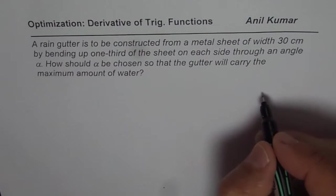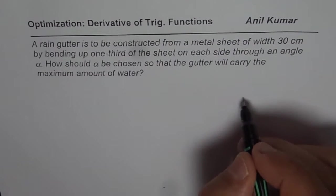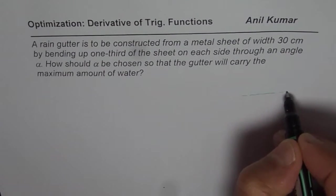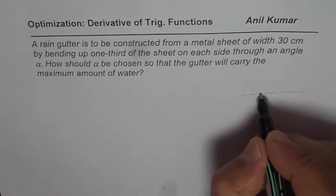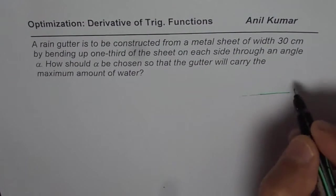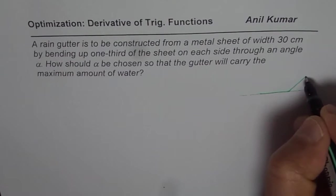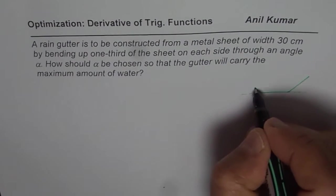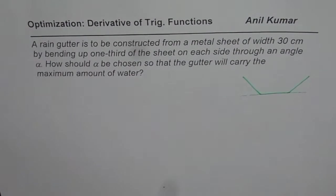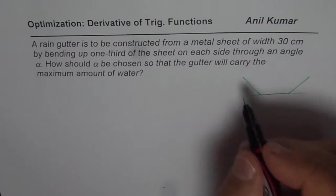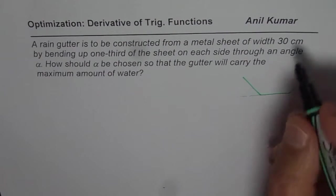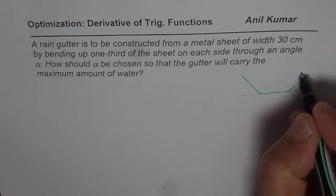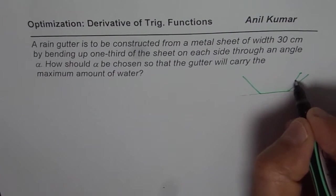The question here is: a rain gutter is to be constructed from a metal sheet of width 30 centimeters by bending up one third of the sheet on each side through an angle alpha. How should alpha be chosen so that the gutter will carry the maximum amount of water?